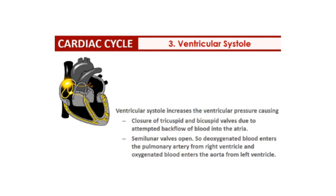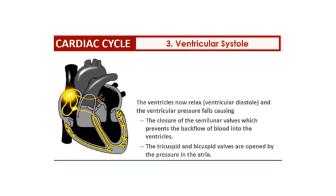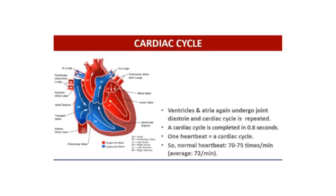This ventricular systole increases the ventricular pressure, causing closure of the tricuspid and bicuspid valves due to the attempted backflow of blood into the atria. The semilunar valves then open, so deoxygenated blood enters the pulmonary artery from the right ventricle, and oxygenated blood enters the aorta from the left ventricle. The ventricles then relax and ventricular pressure falls, causing closure of the semilunar valves, preventing backflow into the ventricles. The tricuspid and bicuspid valves open by the pressure in the atria, and ventricles and atria undergo joint diastole — and the cardiac cycle keeps repeating.